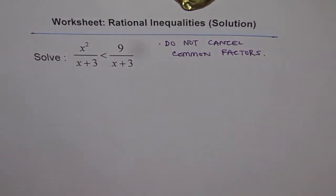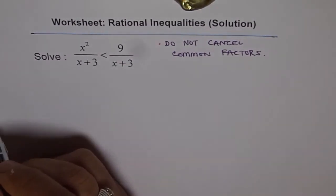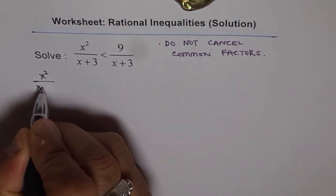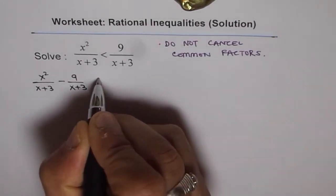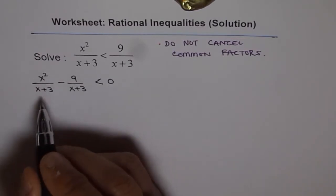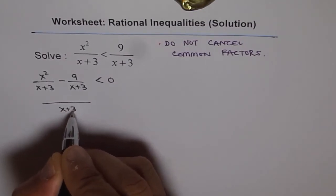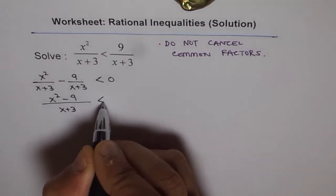Now how do we solve these inequalities? To solve them, we bring everything to one side and try to form a rational function. So we have x squared over x plus 3 minus 9 over x plus 3. This is a simple example — the idea is to teach you the method. Here x plus 3 is the common denominator, so we write x squared minus 9 over x plus 3, which is less than 0.